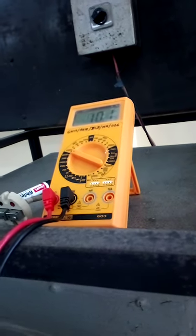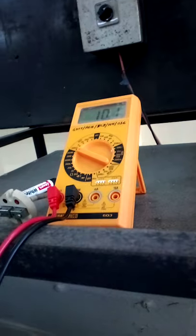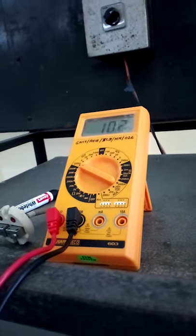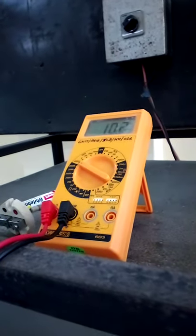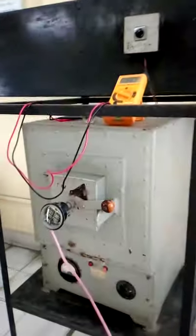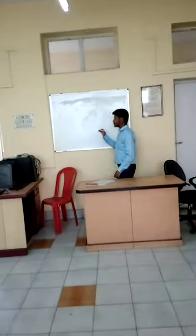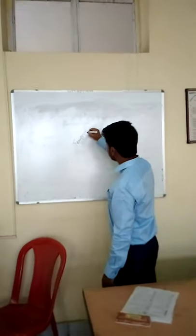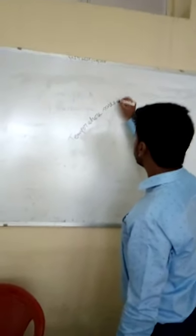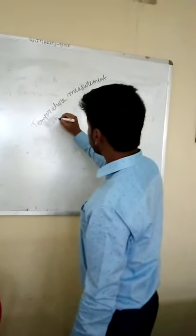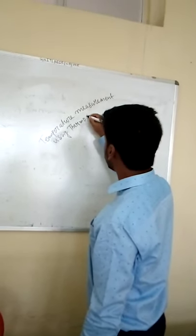We take 4 or 5 readings. The output voltage already increases and the corresponding temperature already increases. This is the experimental setup. Our experiment is temperature measurement using a thermocouple.